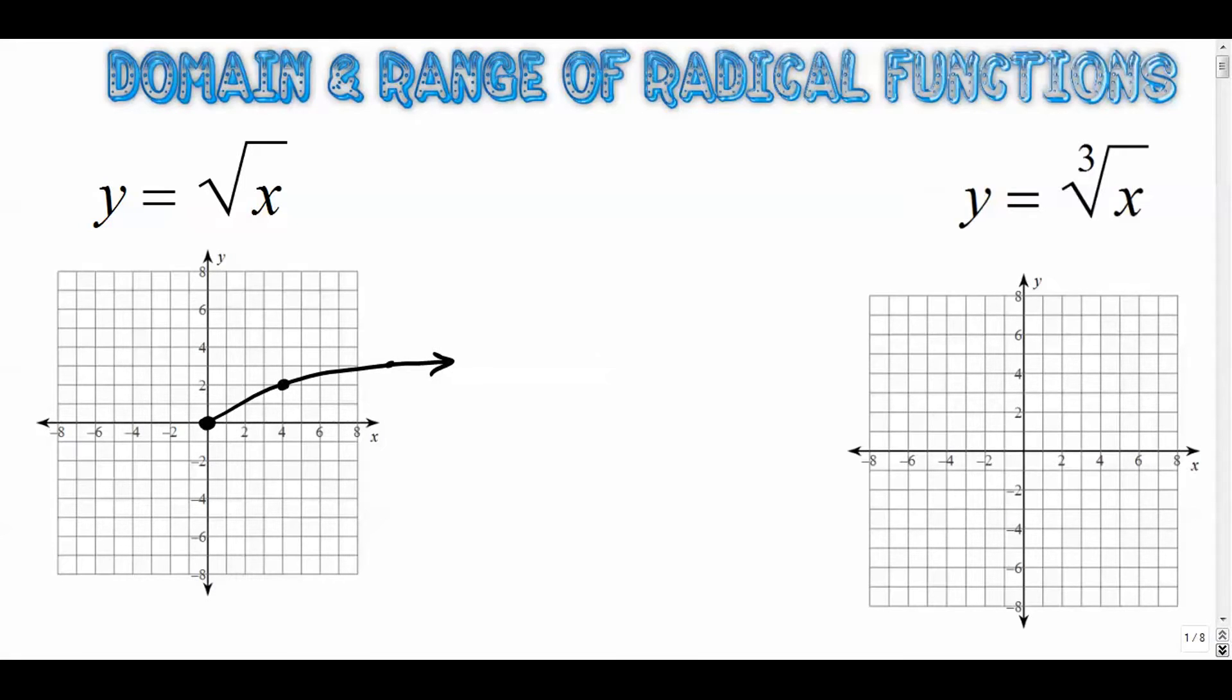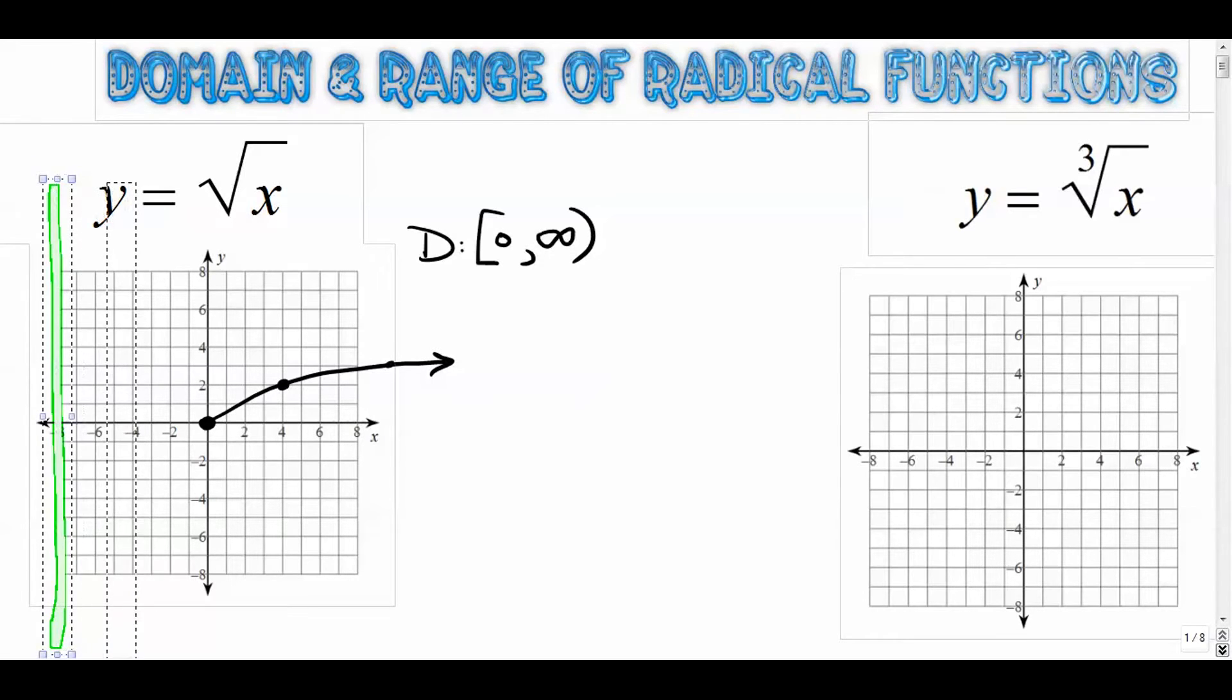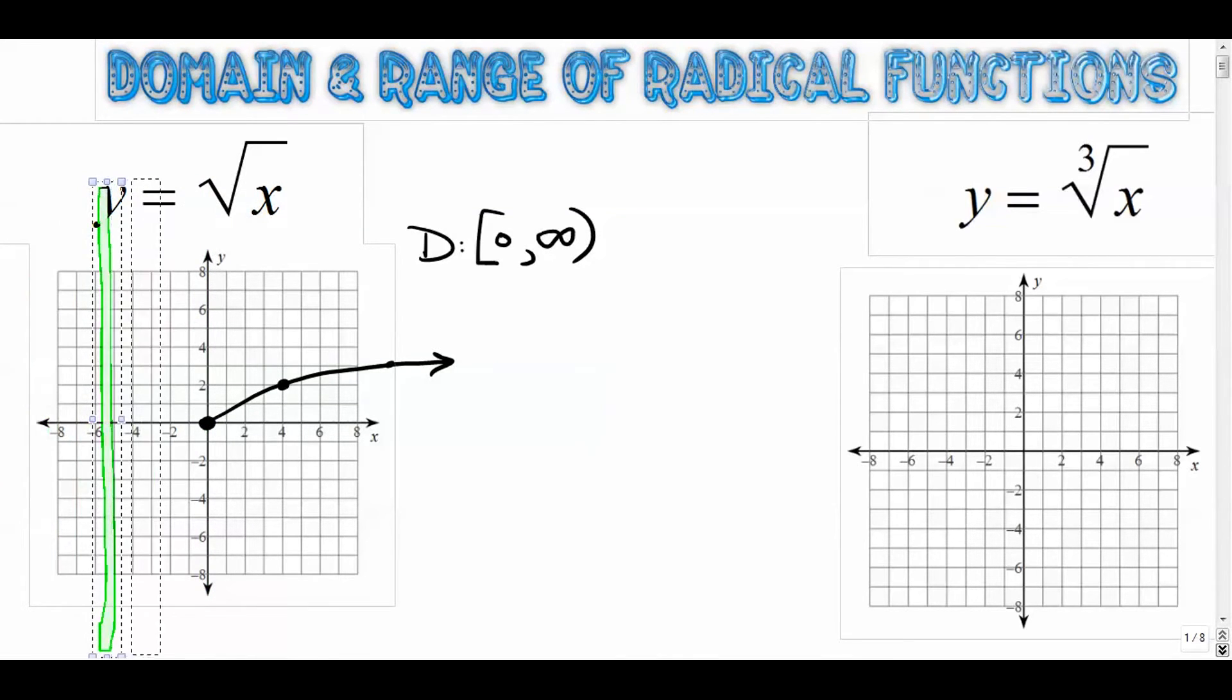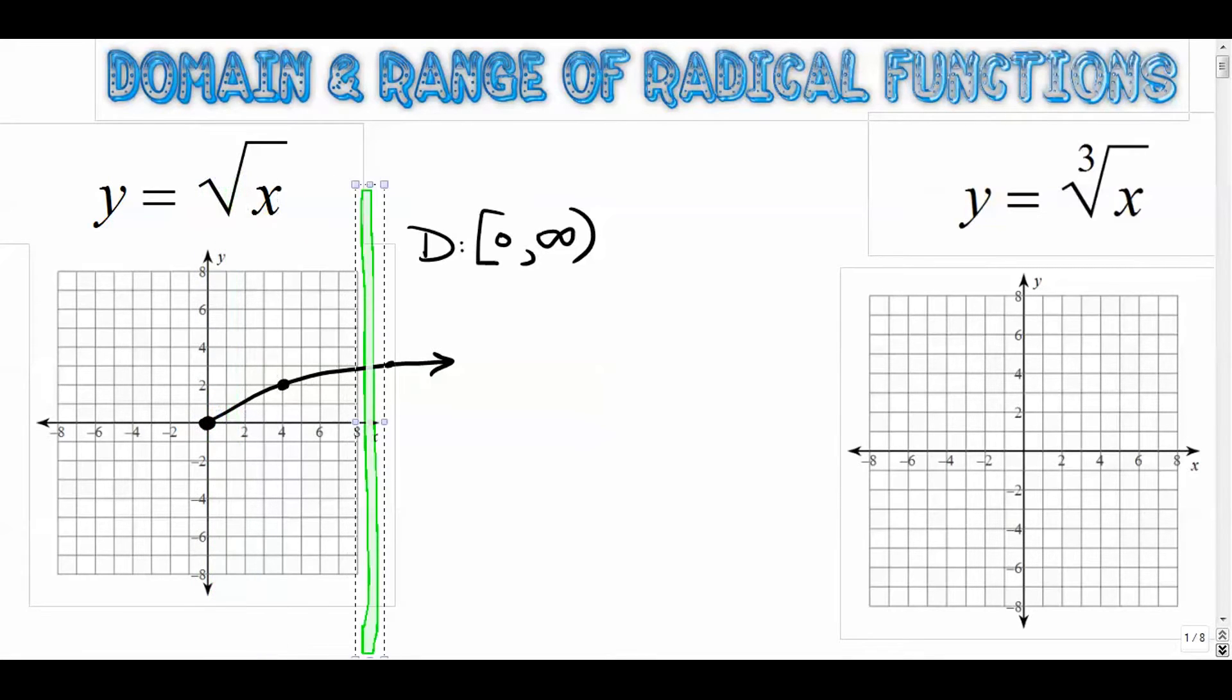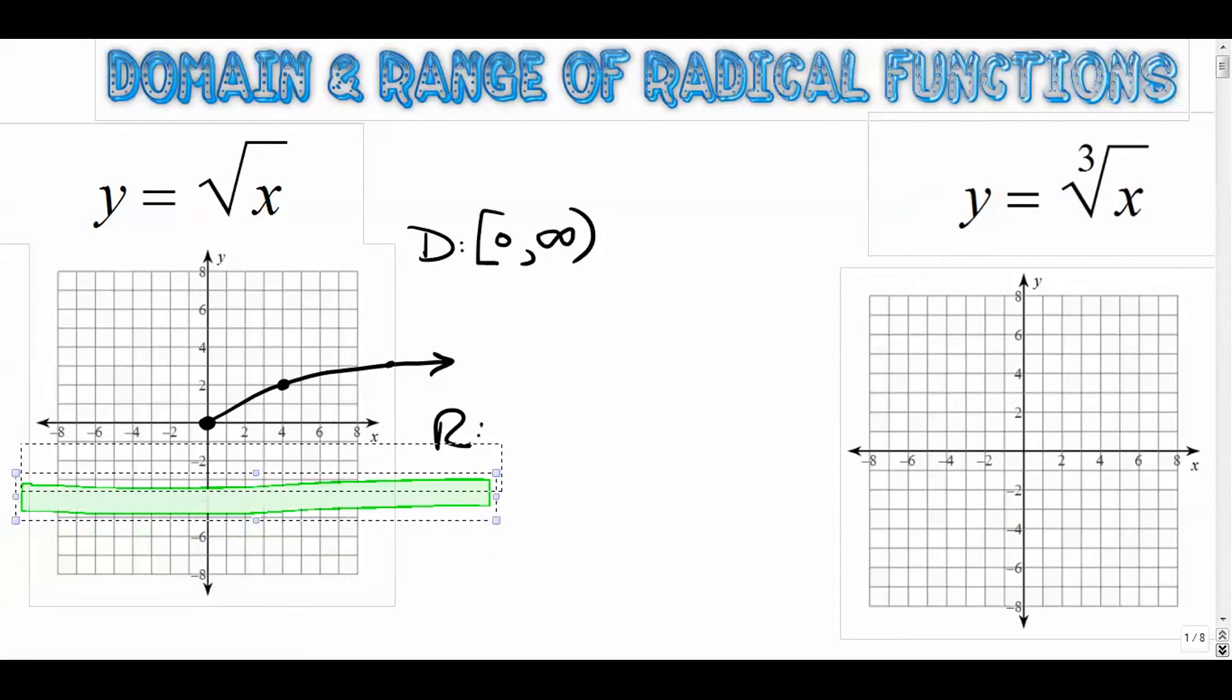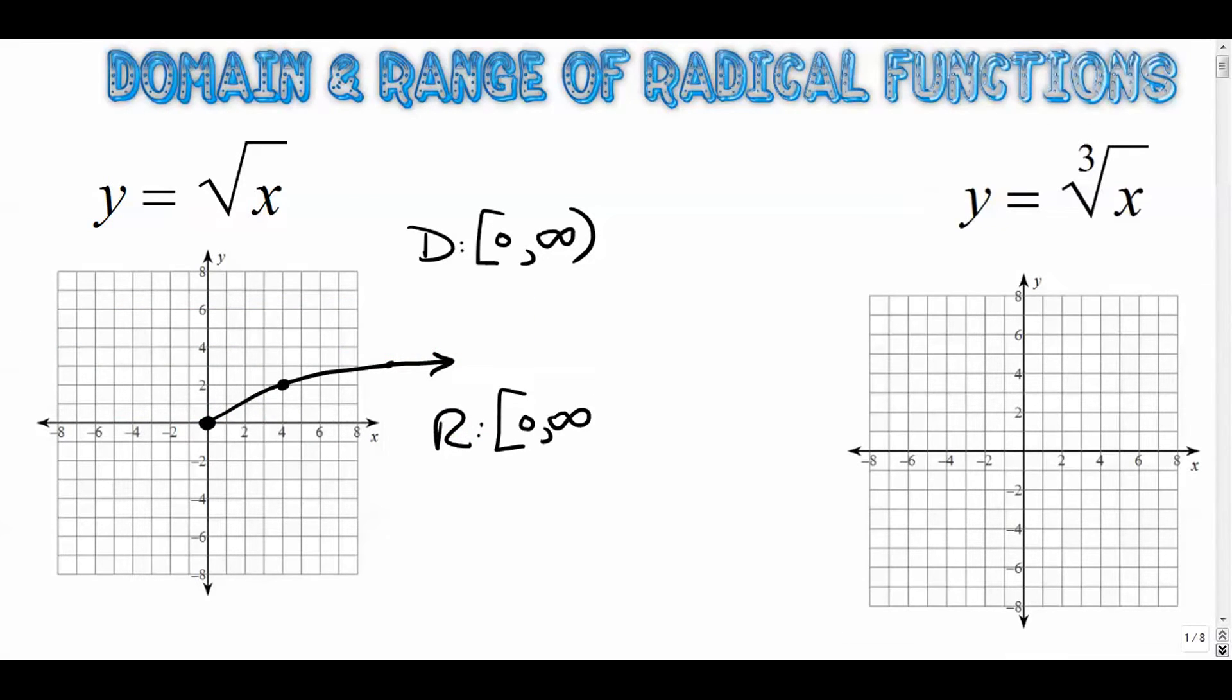The domain of this is close bracket 0 to infinity. Now when we talk about domain again, what I want you to do is get into a habit of maybe putting your pencil down and asking yourself, where does the graph sort of start in terms of left and right. So you lay your pencil down vertically and you just kind of drag it in from the left. You can see it starts right there at 0 and it goes on forever. Now in terms of the range, you would do the same thing except you would use a horizontal line and you want to sort of bring it in from the bottom. Where is the graph first touching your pencil? It starts touching the graph right there at 0 and it goes on forever. So that is the same thing, closed from 0 to infinity.